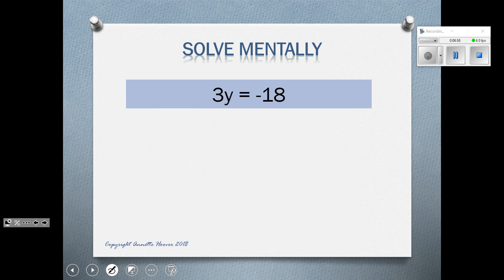Here, y is being multiplied by 3, so we're going to divide both sides by 3. Of course, our 3 divided by 3 cancel out or become 1, the invisible 1. When dividing with one negative, the answer is negative, so that would be negative 6.